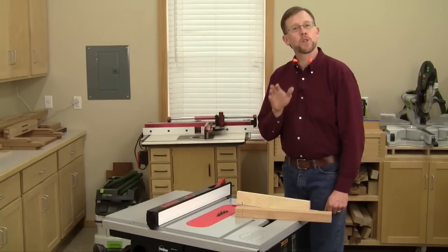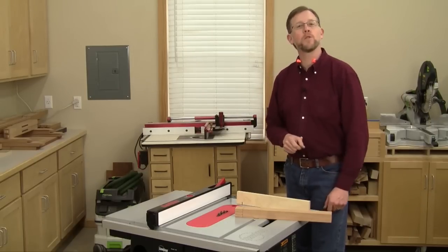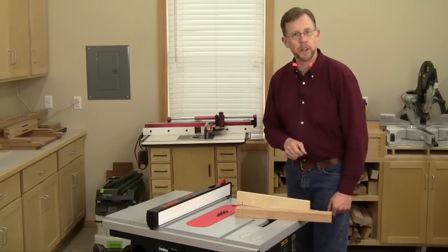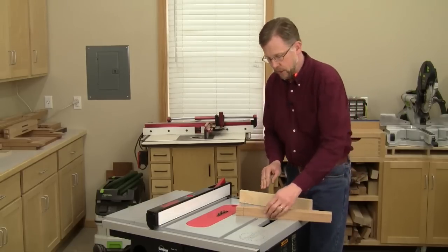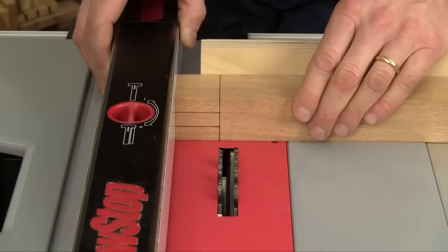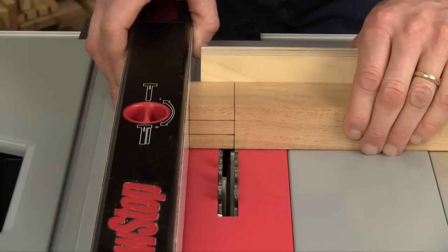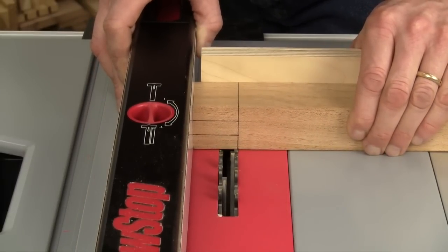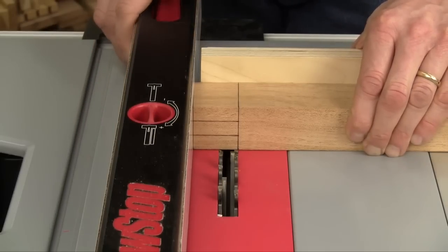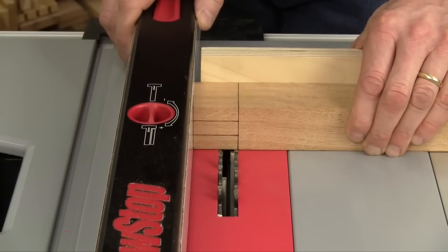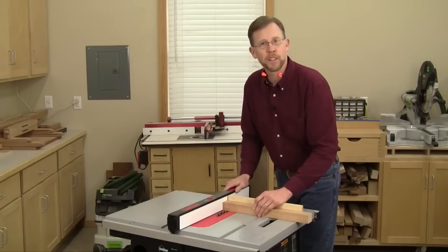So set these cuts up the same way as you did when cutting shoulders with a standard blade. Use your miter gauge with the scrap fence attached, set your workpiece against it, bring the rip fence over and move all three together to line up the outside face of the dado blade with your shoulder layout line and then lock the fence.